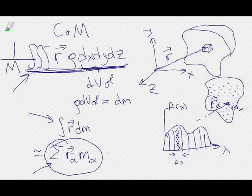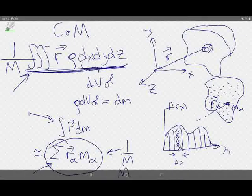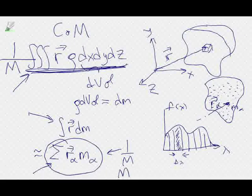The mass will cancel the mass in rho, the dx dy dz will cancel the volume in rho, and you'll be left with just a vector distance — that is the center of mass. So this integral is actually not the center of mass; you multiply by one over m, where m is equal to the sum of m_alpha — that's the mass of the whole thing. That is the center of mass. It's worth being able to look at these integrals and recognize them.